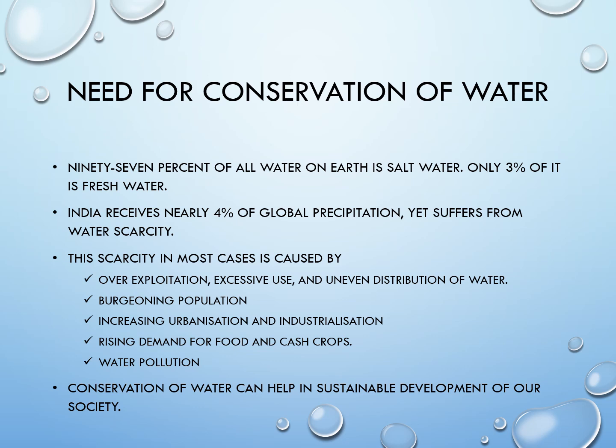Although India receives nearly 4 percent of global precipitation, it suffers from water scarcity. It is mostly caused by over-exploitation, excessive use and uneven distribution of water, ever-growing population, increasing urbanization and industrialization, rising demand for food and cash crops, water pollution and many more. But we know that water is vital for all known forms of life — without water we cannot imagine even a single day, hence conservation of water is a must.